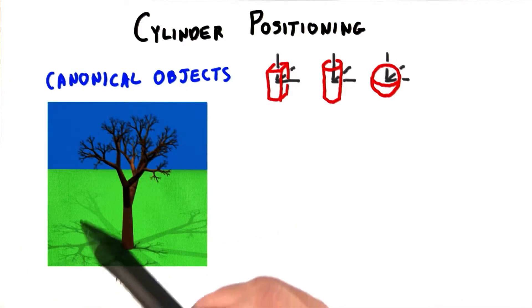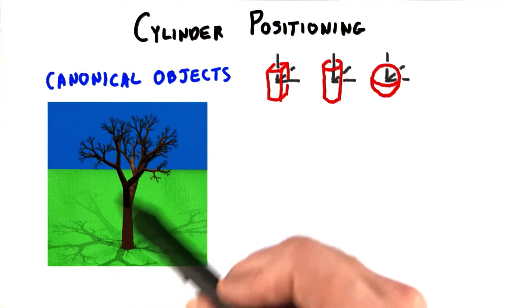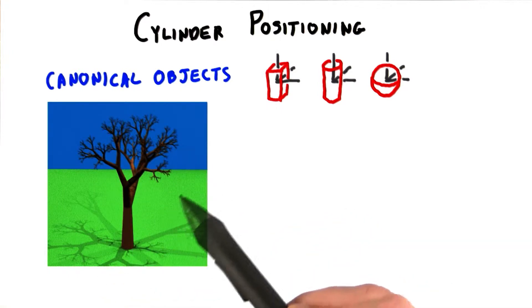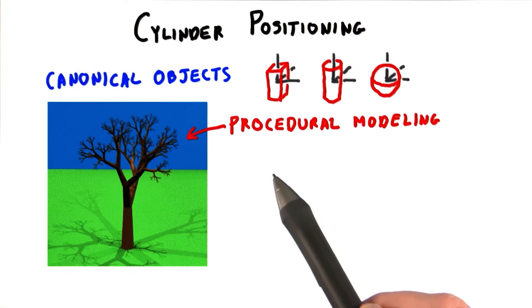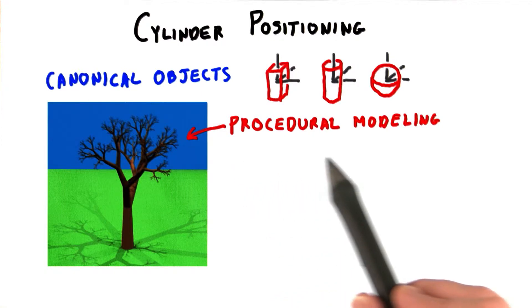For example, if I want to make a model where I want chains of cones to build a tree, I might rather say where I want each end of the cone to be located. This sort of modeling where I run a program to generate an object is called procedural modeling.